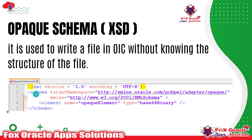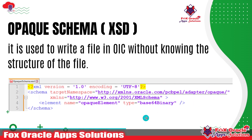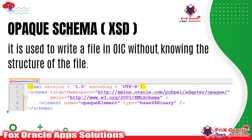Here you can see this is the opaque schema. In opaque schema, what you need to do is just take a copy of that code and save this code as a dot XSD file. You can provide any name; the extension should be XSD. That will be the schema — instead of providing the file structure, you will provide this schema only.